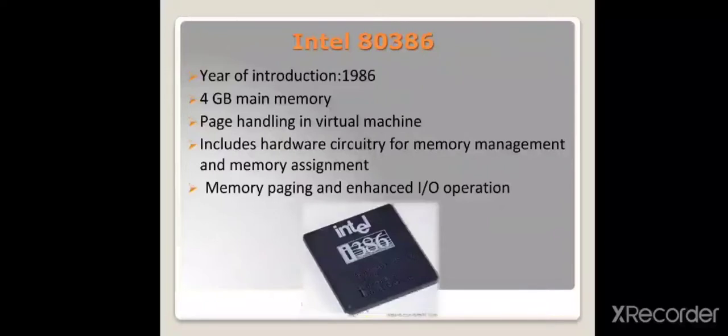Then came the Intel 80386 in 1986. Its main memory size was 4 GB, which was much larger than previous KB and MB sizes. It had enhanced input-output operations and memory paging facility was also available.